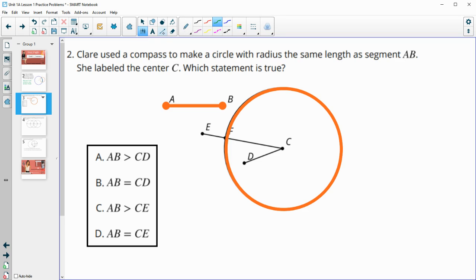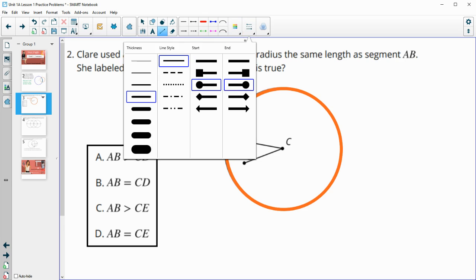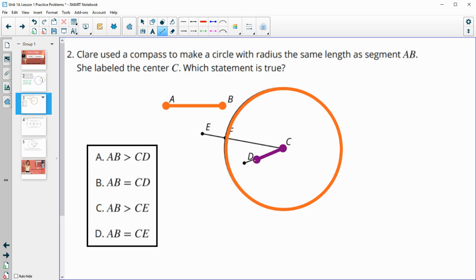Let's take a look at these options and see which one is a true statement. This first one says that AB, this segment here, is greater than CD. So this AB is bigger than CD. Let me just highlight CD here. Now CD is within the circle. So D is on the interior of the circle. C is the center. So we know if this segment went out to the edge of the circle, it would be the same size as AB because it would be a radius.